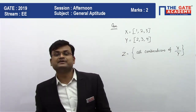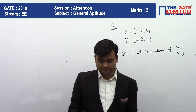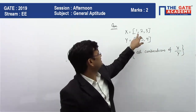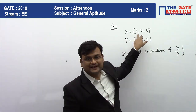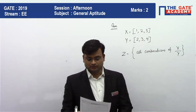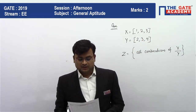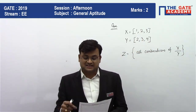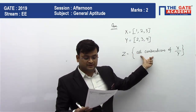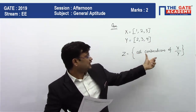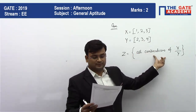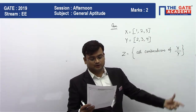So the question — let me read it out for you. Given two sets x and y, x contains the elements 1, 2, 3 and y contains the elements 2, 3, 4. We construct a set z of all possible combinations of x upon y.